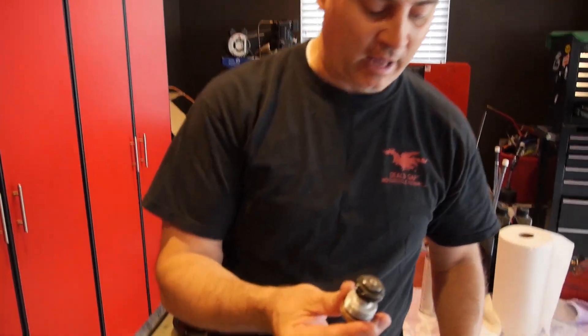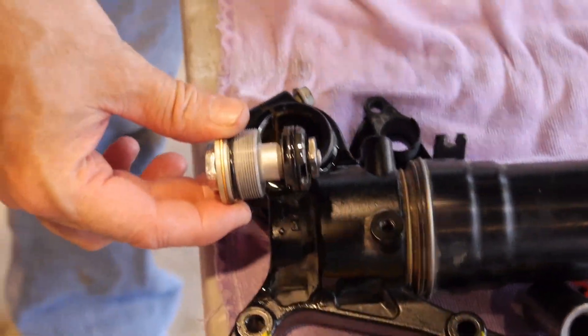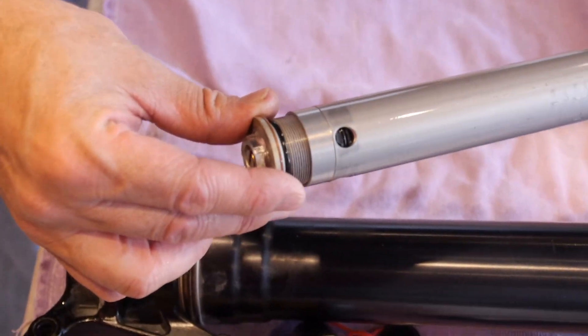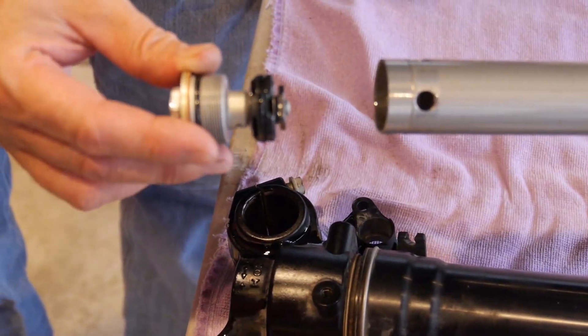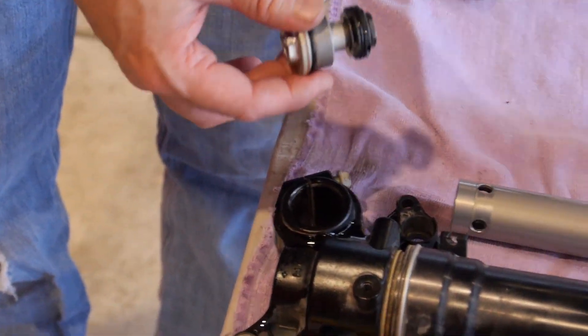Okay, so here is the base valve that was sitting in the bottom of here. This is the cartridge that was sitting inside. The base valve actually threads in here and pinches the base valve up against the bottom fork leg into here. So this is going to sit aside.